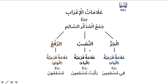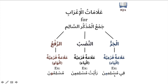For Nasb and Jarr, both take the same sign — a Ya — very similar to Jama' Mu'annath Al-Salim. For example, Ra'aytu Al-Muslimina: Muslimin is the Maf'ul bihi (object of the verb), so it is Mansoob, and its sign is a Ya instead of a Fatha. Similarly, Fi Muslimina is Majroor, but its sign is also a Ya instead of a Kasra.